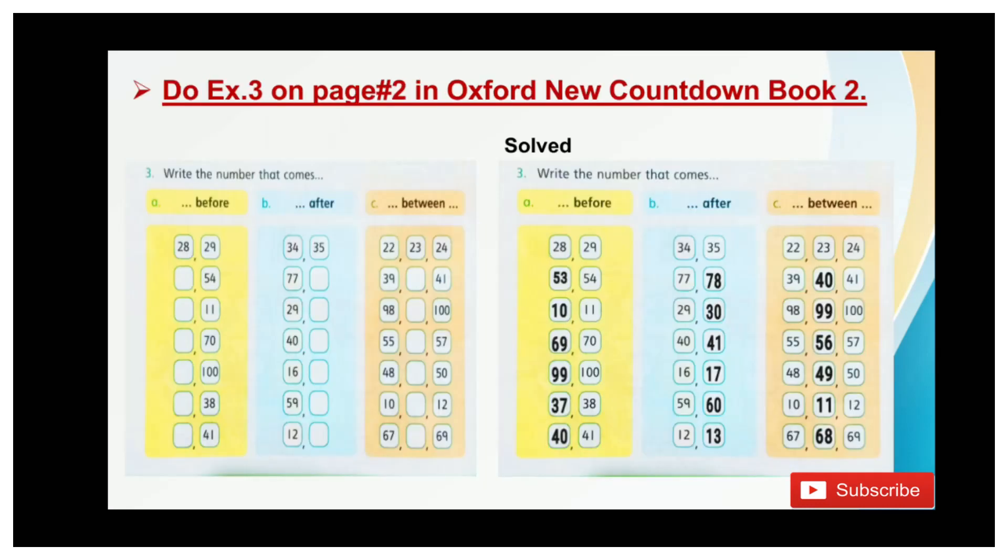Open page number 2 and do exercise 3: Write the numbers that come before, after, and between. Section 1 is done for you. Let's do before first. Before number means what come in previous. What come before 54? It is 53. What come before 11? It is 10. What come before 70? It is 69. What come before 100? It is 99. What come before 38? It is 37. What come before 41? It is 40.